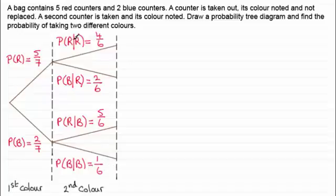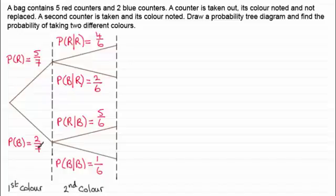It's this notation that I would encourage you to use, because if you just left it as P(R), P(B), P(R), P(B), notice how those probabilities change and they're not exactly the same as the ones we've written here. This would lead to confusion later when we're dealing with conditional probability. But the rules remain exactly the same for working out probabilities from the tree diagrams.